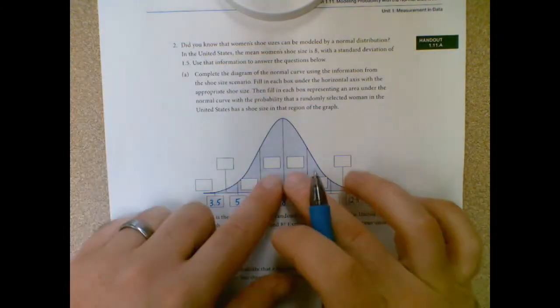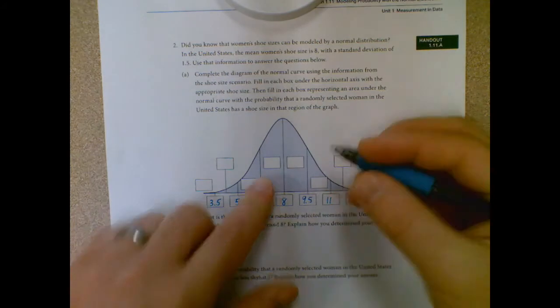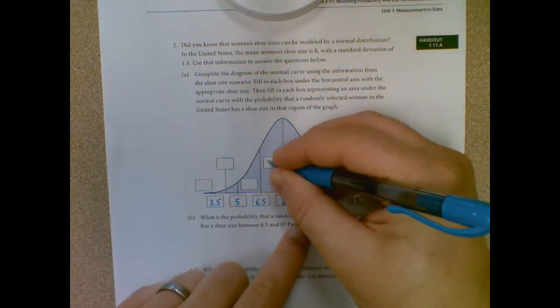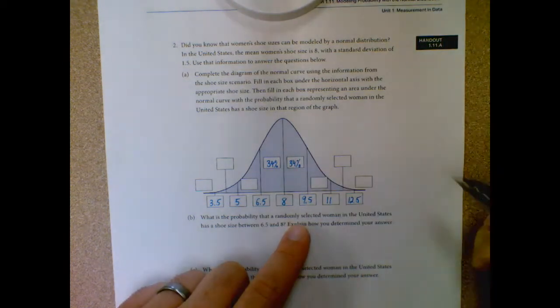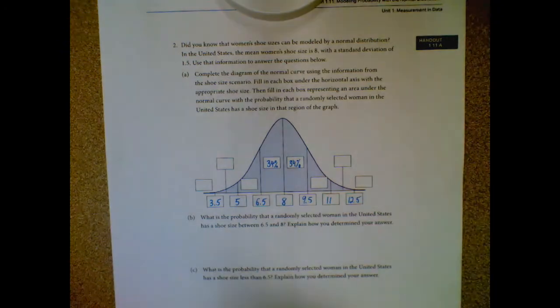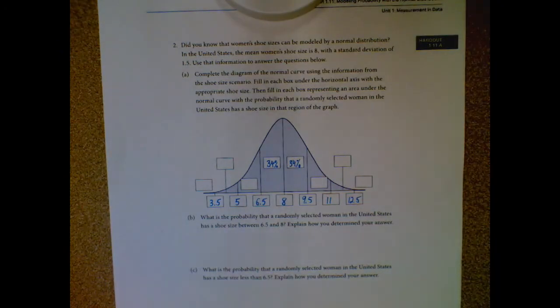So we know this middle part is 68%, right? So when I divide that in half, I have 34% here and 34% here, or if you leave them as decimals, that's perfectly fine too. It doesn't really matter all that much on that front.